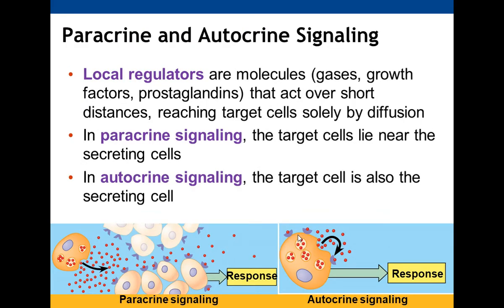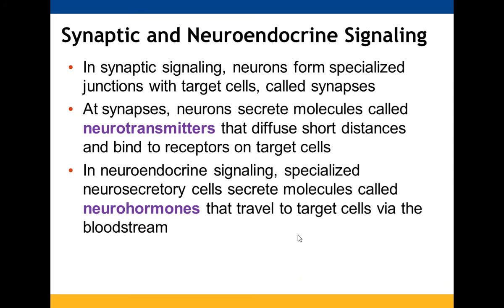There are signaling types known as paracrine and autocrine signaling. Local regulators are molecules — gases, growth factors, prostaglandins — that only act over short distances and must reach their targets via diffusion. Paracrine signaling occurs when local regulators act on cells near the secreting cell. Autocrine signaling is when the target cell is also the secreting cell. Synaptic signaling involves the nervous system, where neurons form specialized junctions with target cells called synapses.